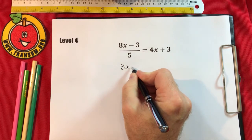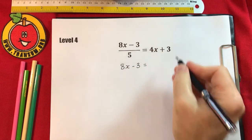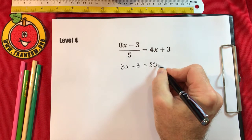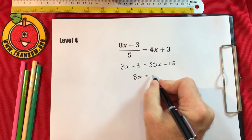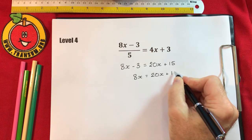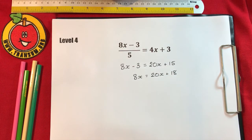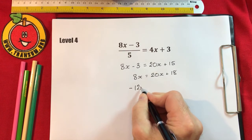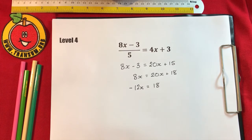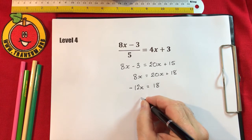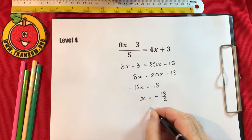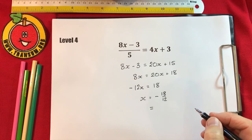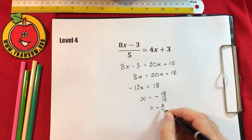Multiplying by 5 leaves 8x minus 3 on the left of the equation, and multiplying all of the right side by 5 gives 20x plus 15. Then add 3 to both sides: 8x equals 20x plus 18. Subtract 20x from both sides: minus 12x equals 18. Then divide both sides by negative 12, so x equals negative 18 over 12.